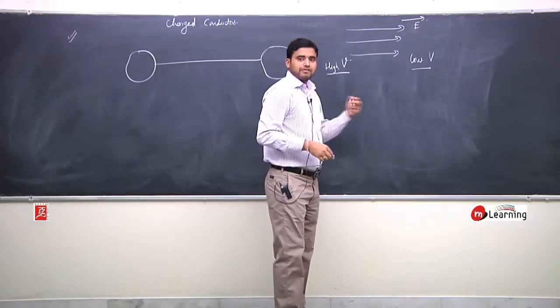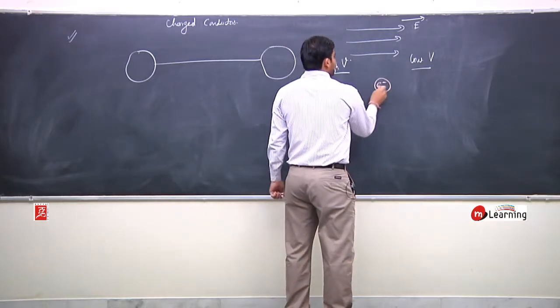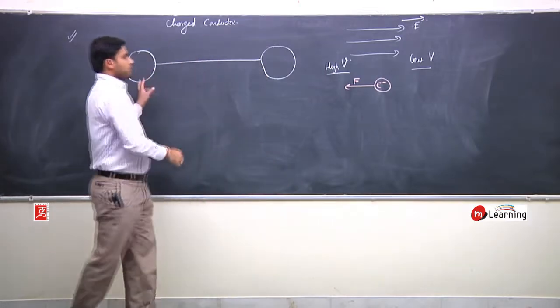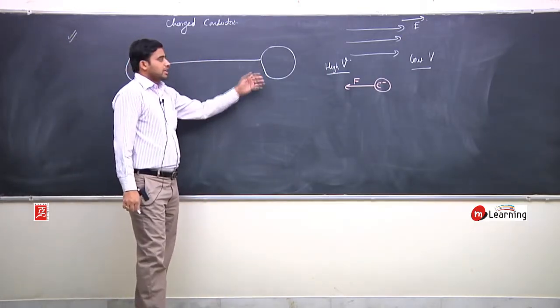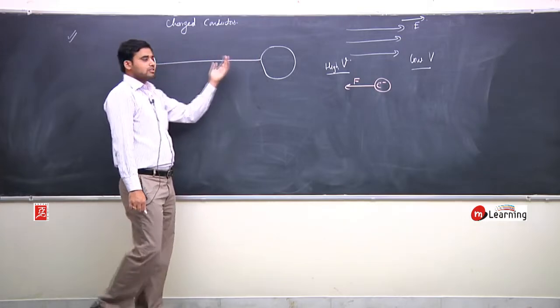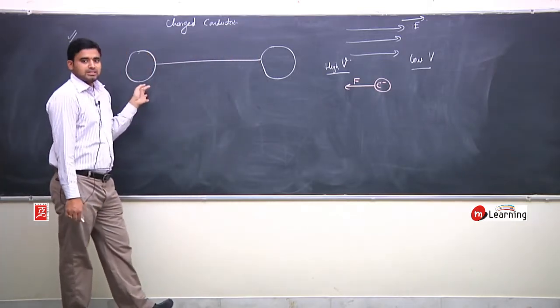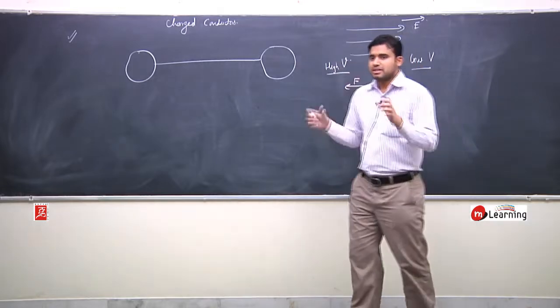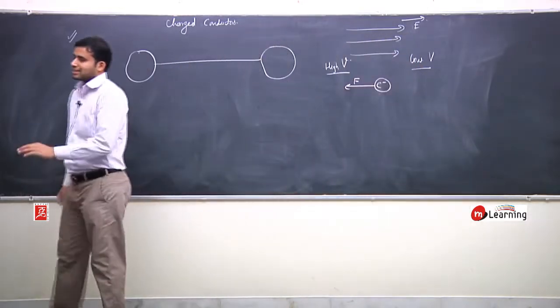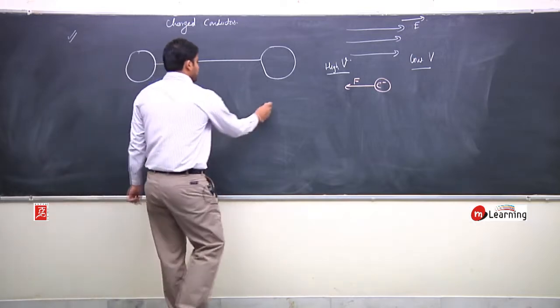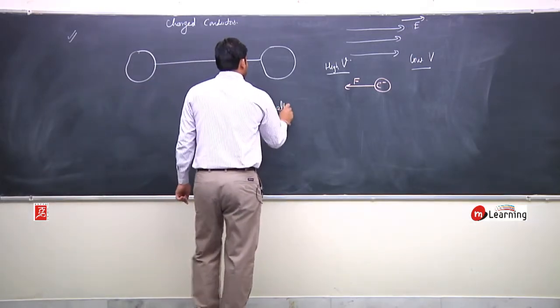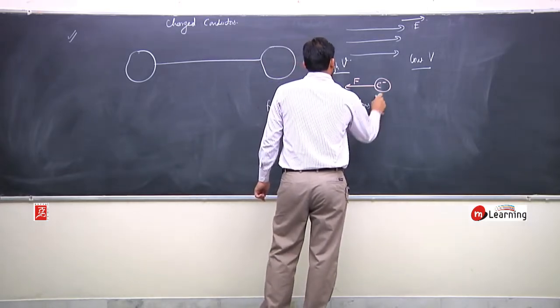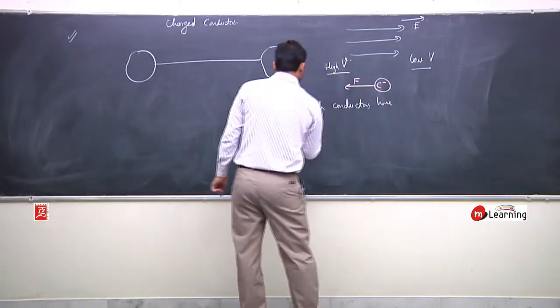So conductor ke under free electrons ki baat karein. Electric field me in pe force lagega opposite direction. So agar potential me difference hai, so electrons pe force lagega, or electrons is taraf jama honne lagenge. Jiske karan ye potential difference kam hote jayega. And finally, steady state pe kya hoga? Dono conductor ka potential same ho jayega.